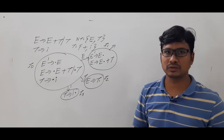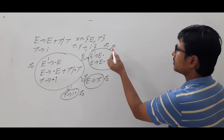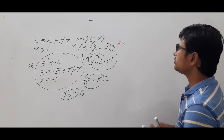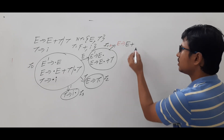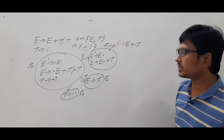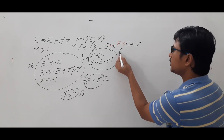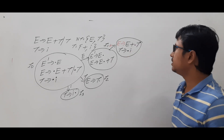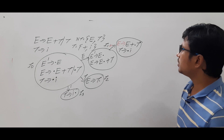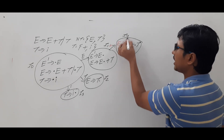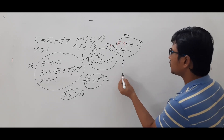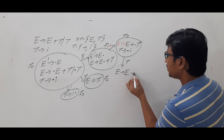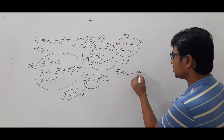Now I₁ on plus: we compute GOTO(I₁, plus). We shift the dot past plus, giving E → E +• T. Again there is dot T, a non-terminal, so we compute closure: T → •i is added. This gives us item I₄. Then GOTO(I₄, T) gives E → E + T•, which is a reduce move. This is item I₅.